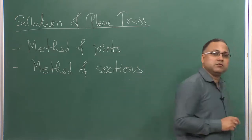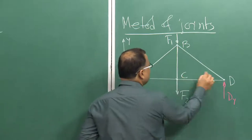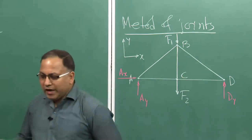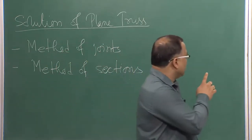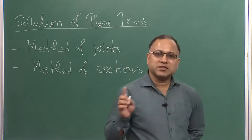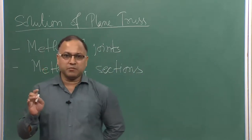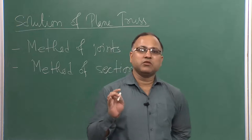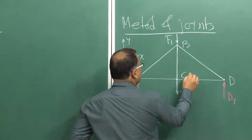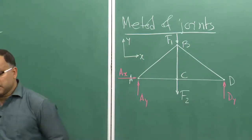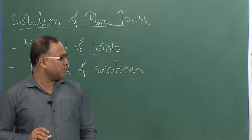Next, check whether the truss is rigid or not. Count the number of joints: there are 4 joints. To get a just rigid truss you need a minimum of 2×4 − 3 = 5 members. Counting the members: 1, 2, 3, 4, 5 - there are 5 members. Therefore this is a just rigid truss. All these checks are done before analyzing the problem.